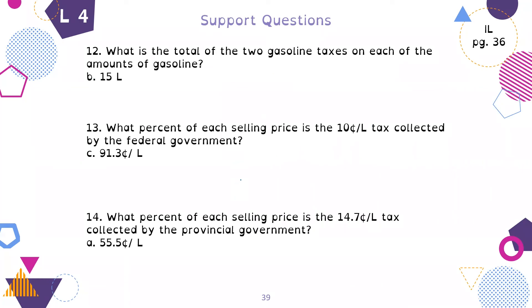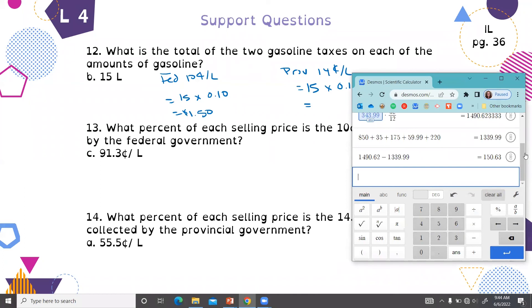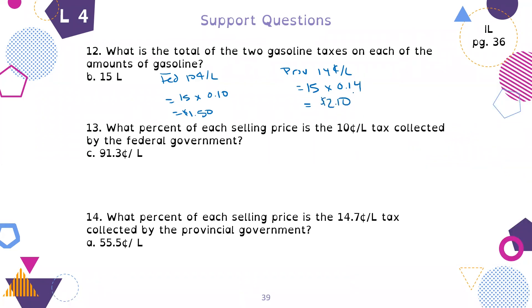For gasoline, there are two gasoline taxes on each. If it's 15 liters, the federal tax was 10 cents per liter, so 15 times 10 cents. And for the provincial it was 14 cents per liter, so 15 times 14 cents. For federal we pay $1.50 in tax, and for provincial $2.10. That's the part we're paying towards taxes. We're not going to go into those right now, we're just going to keep going.